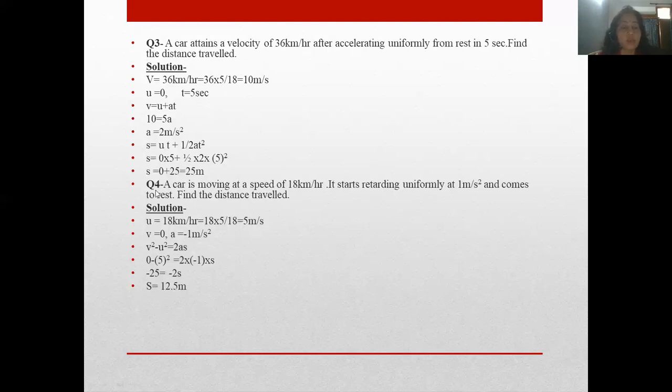Now the fourth question: A car is moving at the speed of 18 km/h. Again, this is U. It starts retarding, speed starts decreasing, uniformly at 1 meter per second square and comes to rest. Find the distance traveled. U is this, V is zero. A is retardation. It starts retarding. Retardation word has come here. A is meter per second square, again unit of acceleration or retardation. So when retardation is taken in A form, we put minus 1. Again substitute the value. We will get S = 12.5 meter.